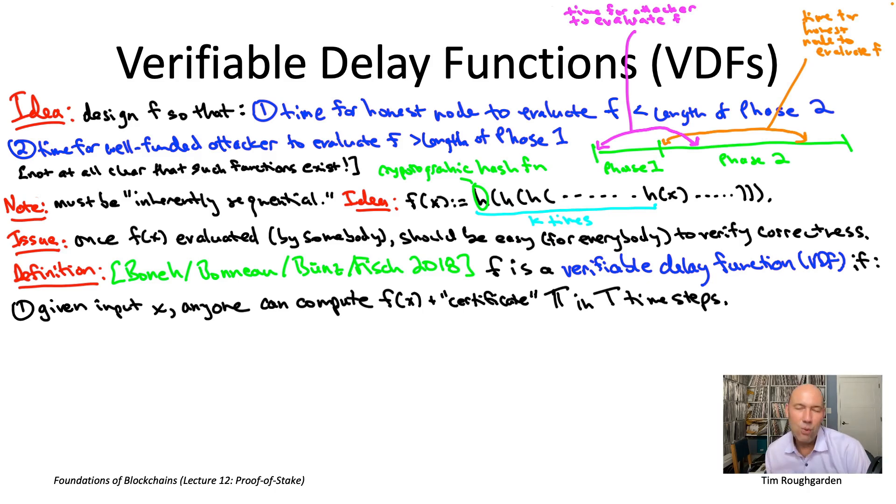The first property says that anyone willing to put in the work should be able to evaluate the VDF, little f. How much work exactly? That's controlled by a parameter capital T, which when you choose your VDF, you're also sort of choosing what you want your parameter capital T to be.